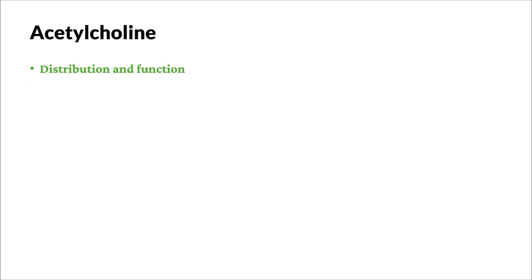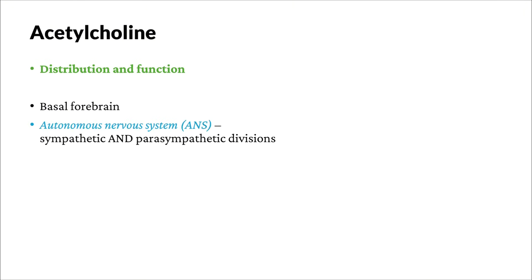Where is acetylcholine distributed? It is distributed in the basal forebrain, in the autonomic nervous system — both the sympathetic and parasympathetic divisions — and in alpha motor neurons. We will talk about the basal forebrain and the ANS in our episode about anatomy overview. Alpha motor neurons are the presynaptic neurons at the neuromuscular junction — the neurons that form a synapse with the muscle cells directly.